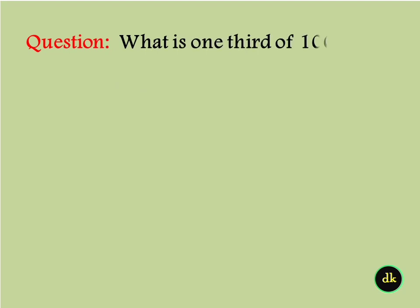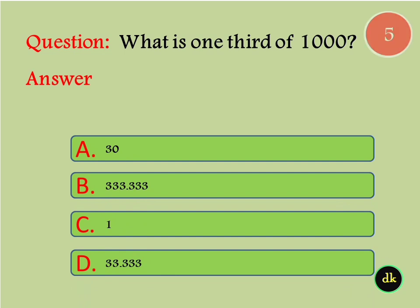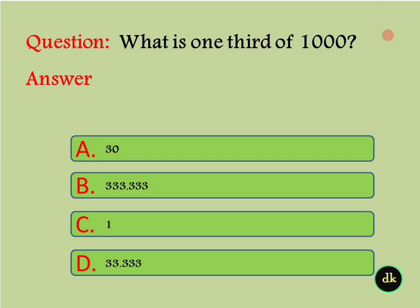What is one third of a thousand? Answer is 333.333.